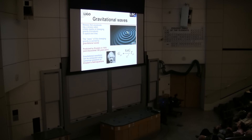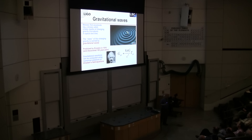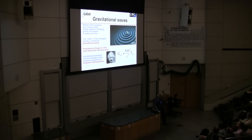Gravitational waves have nothing whatsoever to do with light. So if they travel at the speed of light, that tells us more about space-time than it does about matter, energy, and the form of the energy. In other words, they travel at the fastest speed sustainable by space-time. And light shares the same property.